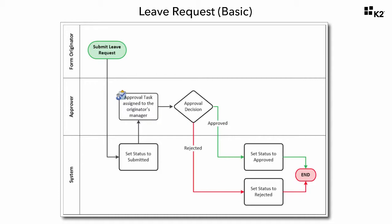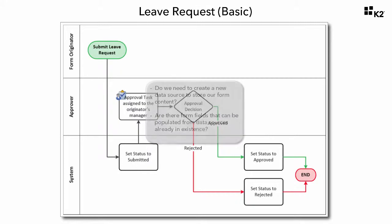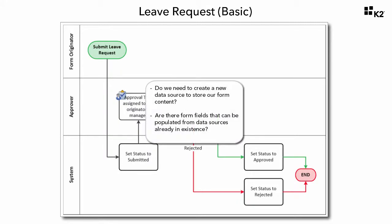Every organization will have a need to track and process leave requests from their employees throughout any given year. Thus, a leave request processing system is a common application to implement with K2 early on. We begin designing a new application by scoping out the workflow as a flowchart, either drawn by hand or laid out electronically in a tool such as Visio. This gives us an overview of what we are trying to accomplish, gets all stakeholders on the same page, and helps determine where our forms and data will come into play, as well as whether we need to create a new data source or populate fields from existing ones.